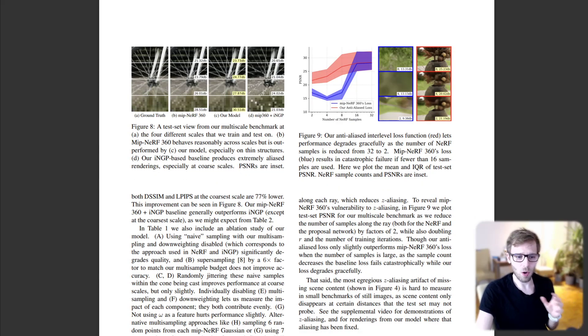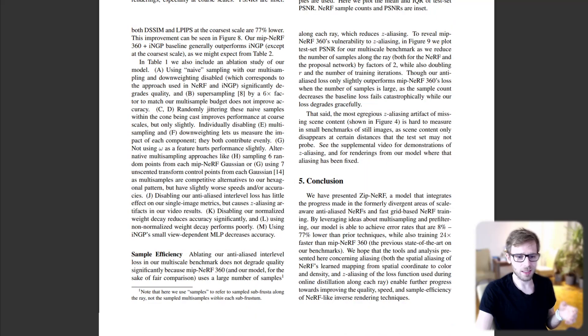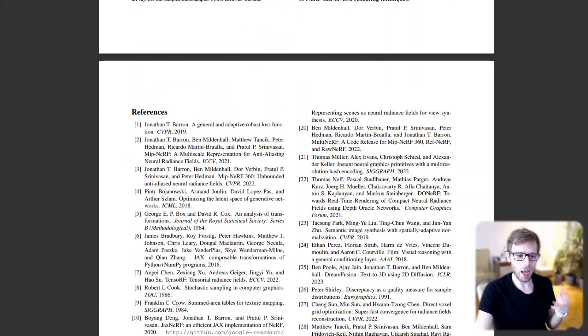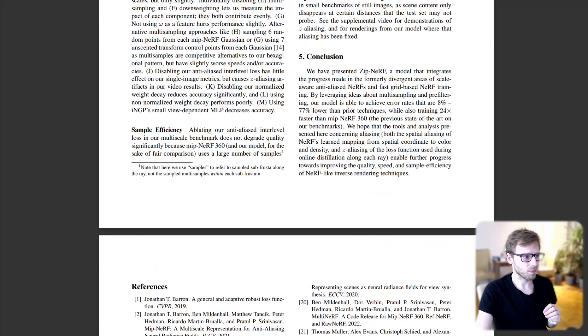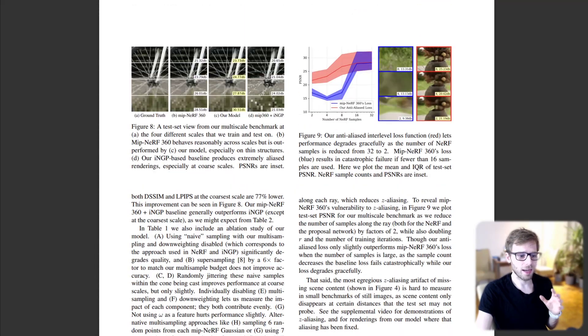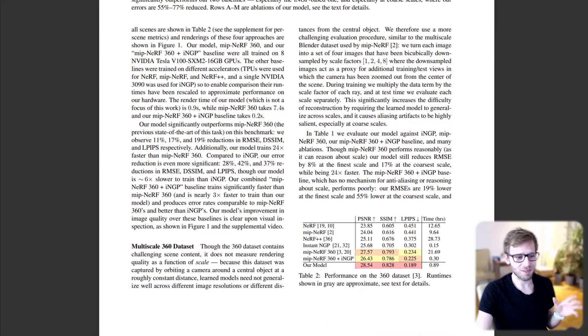Z-aliasing is another challenge that Zip-NeRF tackles effectively. These artifacts, where foreground content alternately appears and disappears as the camera moves towards or away from scene content, are significantly reduced by Zip-NeRF. And that's a wrap-up of Zip-NeRF.